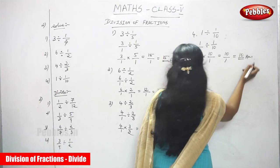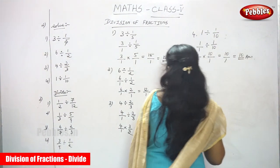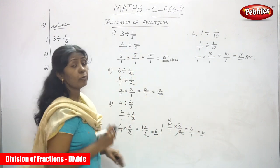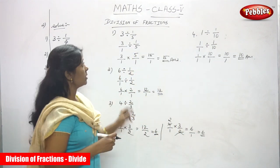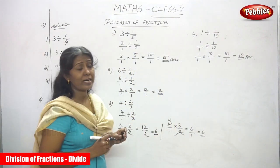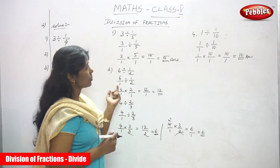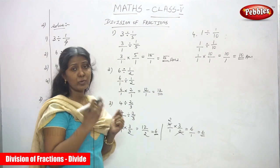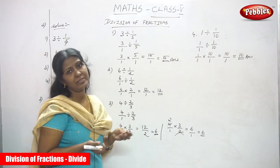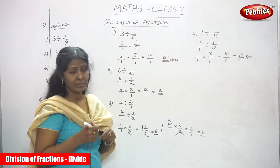So the answer is 10 for this question. I have solved four sums. I think you understand divisions of fractions — first we saw fraction with a whole number, and here whole number with the fraction. That's it.